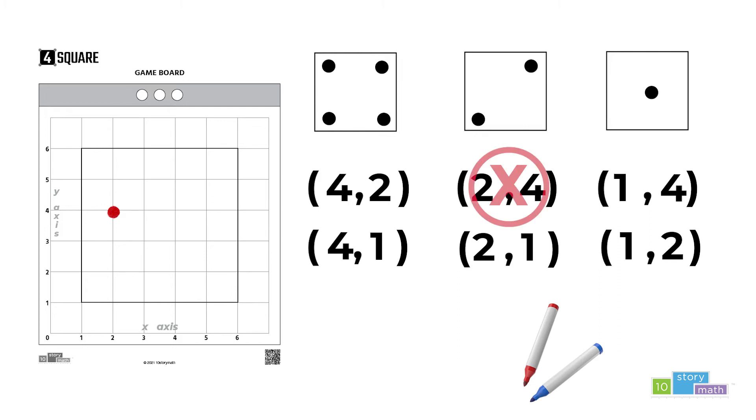The blue team chose to use the point (1,2). And using the blue marker, they will mark that location on the game board.